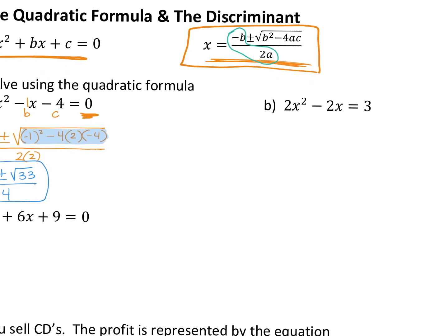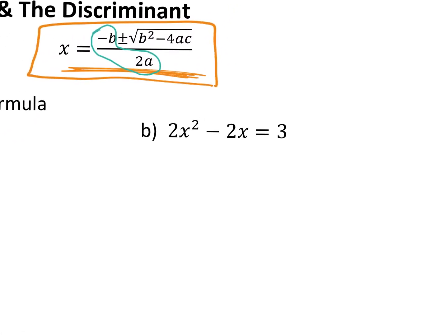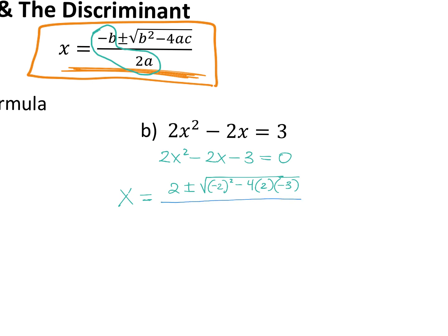Moving on to letter B. What do you have to do first to put this into the quadratic formula? Subtract three. So two X squared minus two X minus three equals zero. Now let's plug it in. X equals negative B — so a positive two — plus or minus the square root of negative two in parentheses squared minus four times two times negative three. We have all that on top divided by two times your A value, so two times two.